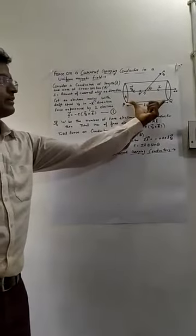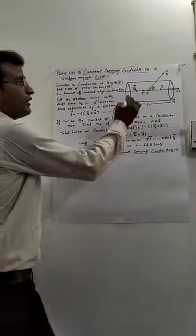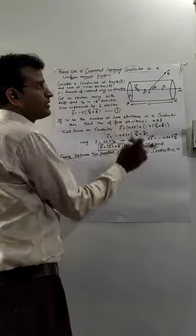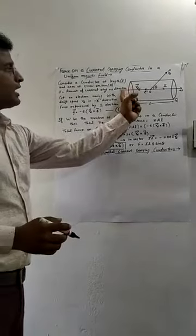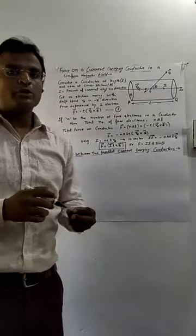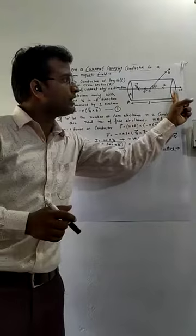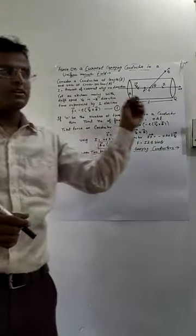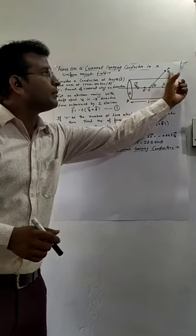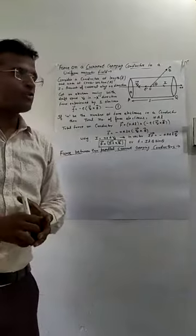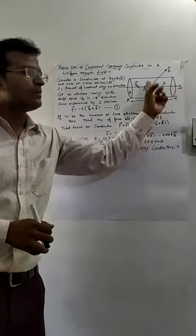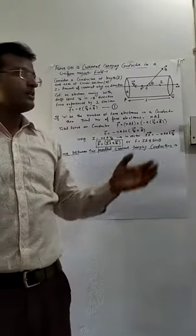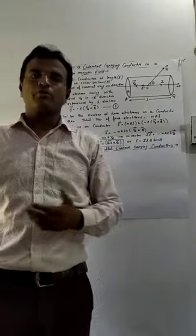Consider a conductor where L is the length and A is the area of cross-section. Let I be the amount of current flowing through it, and the direction of current is along the positive x-axis. The magnetic field B makes an angle theta with the direction of current.